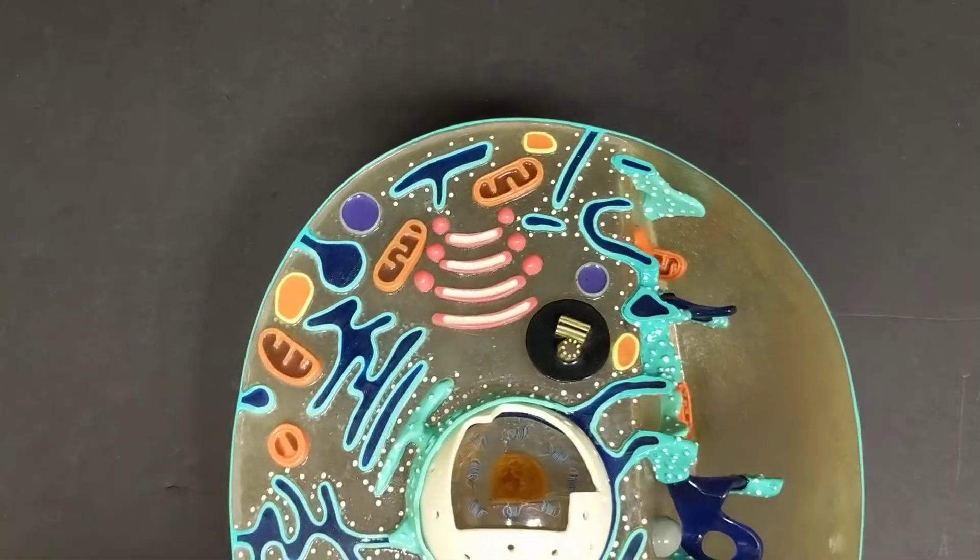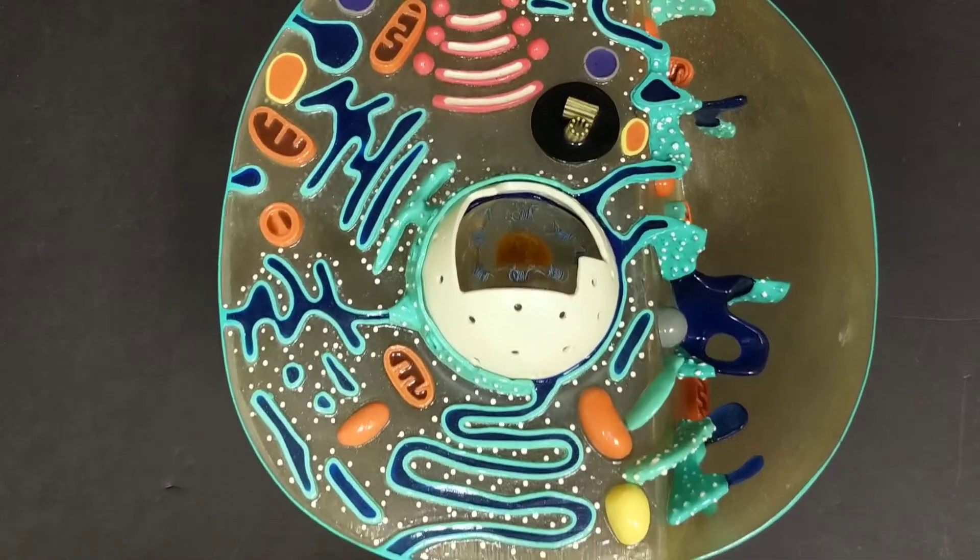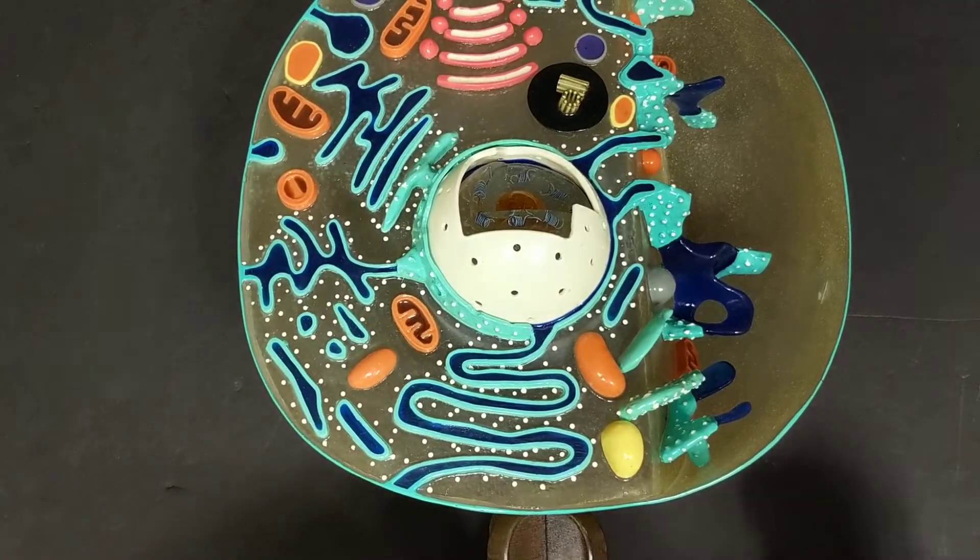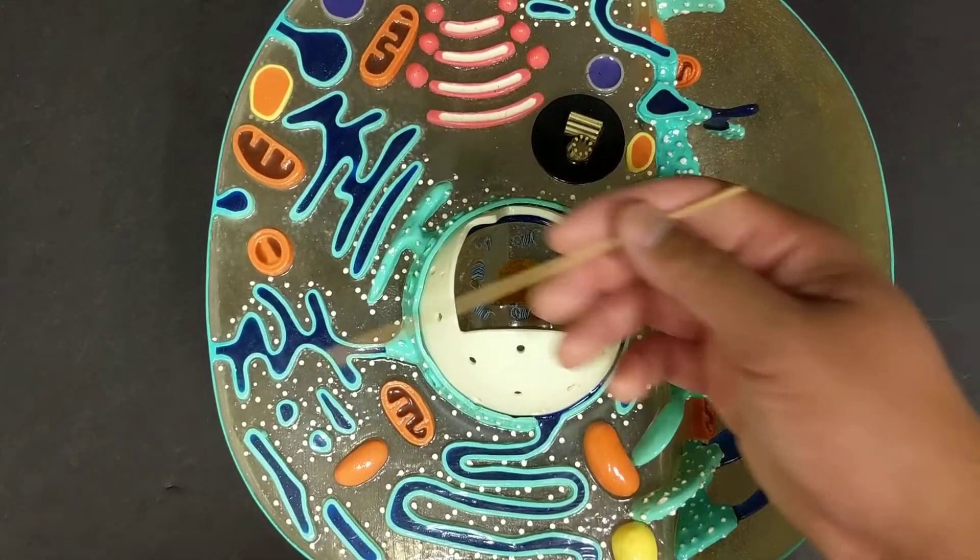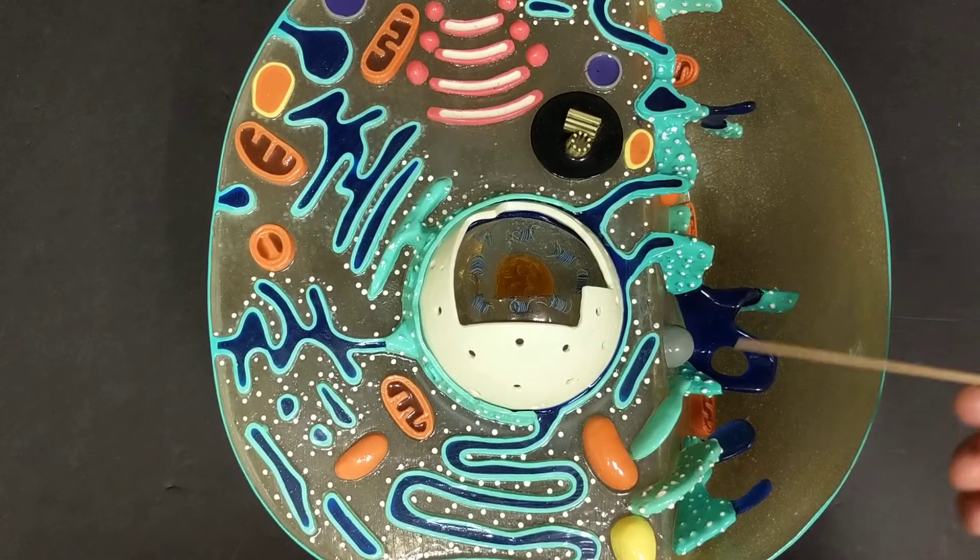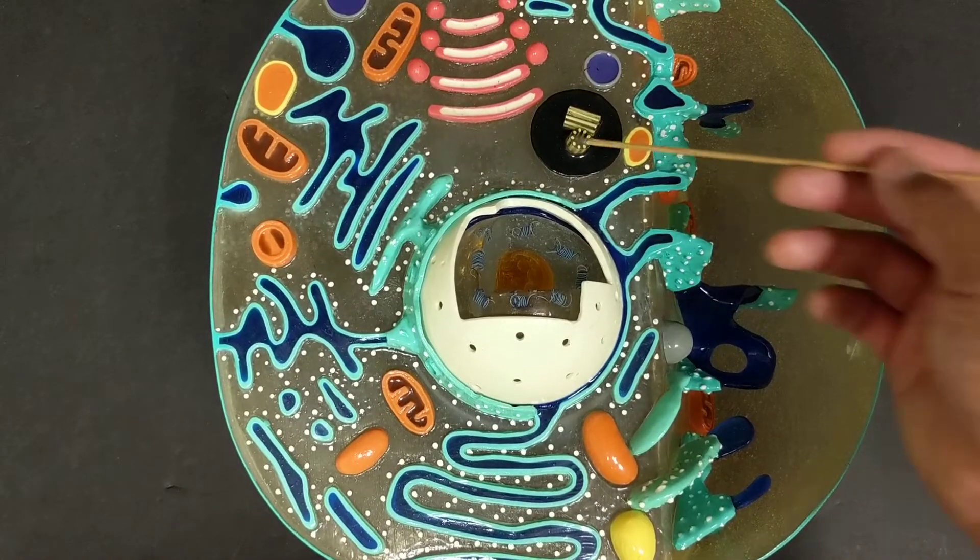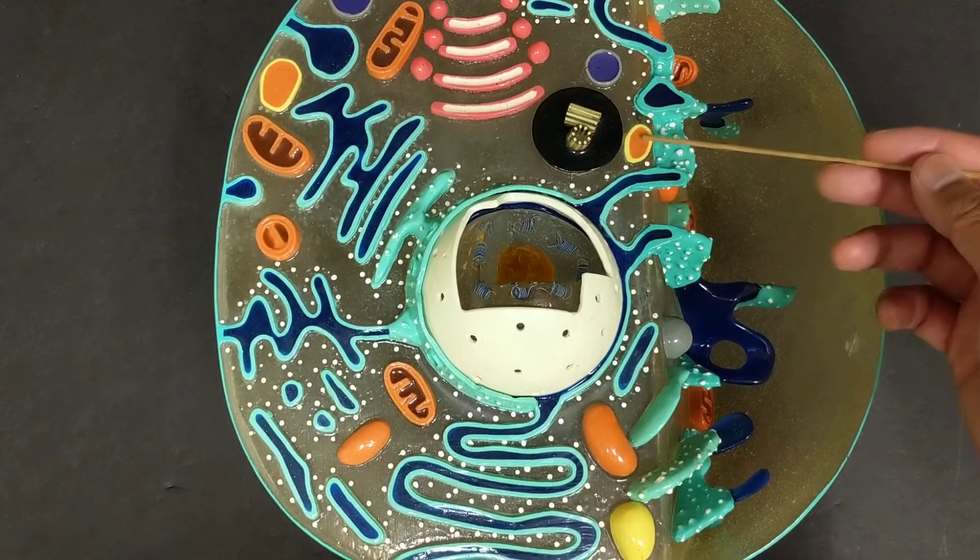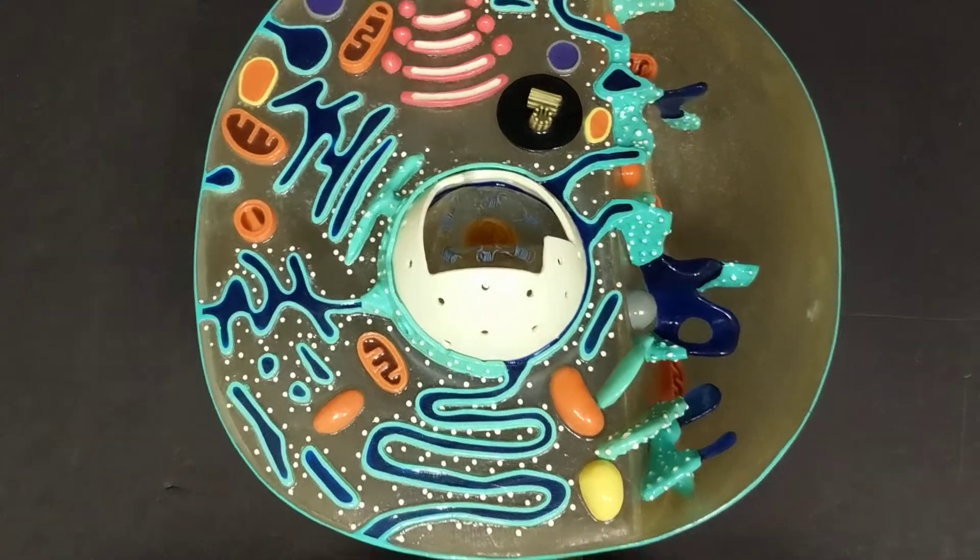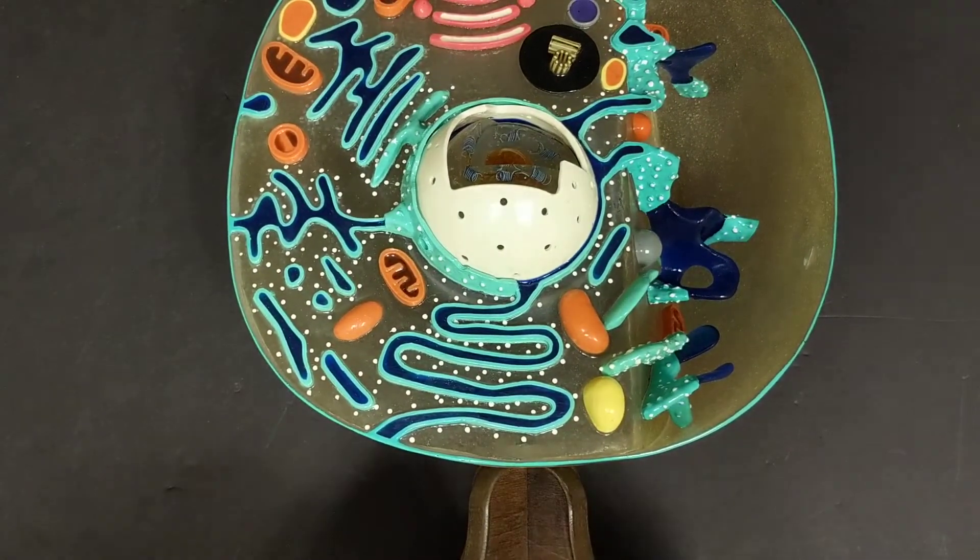Now in this case, the lysosome, once again, is kind of the most non-discreet organelle. If this is the mitochondrion, you know that's not the lysosome. You know that these are not the lysosomes. You know that this is not the lysosome. It's actually these yellow ones.